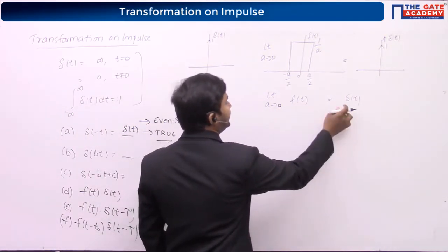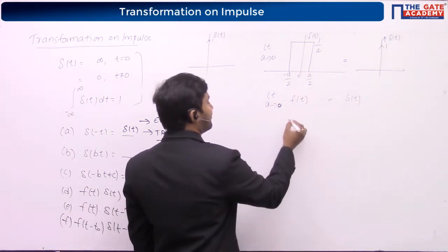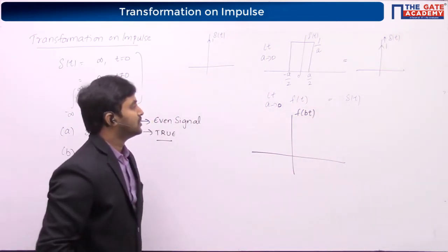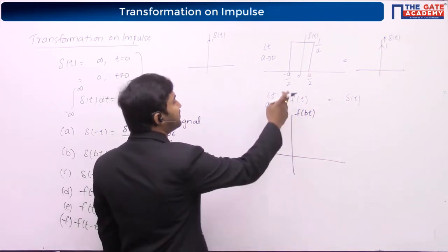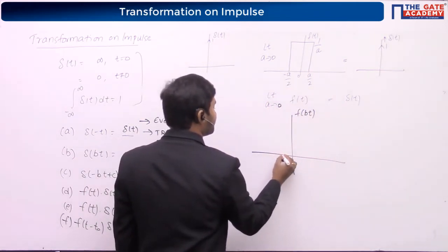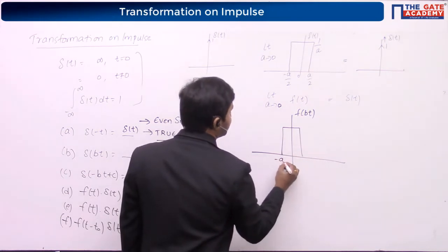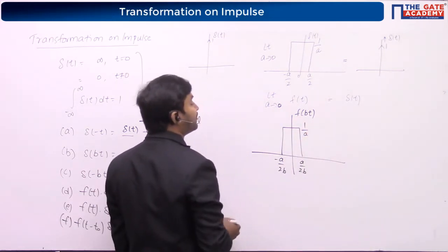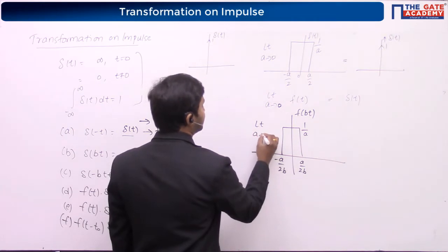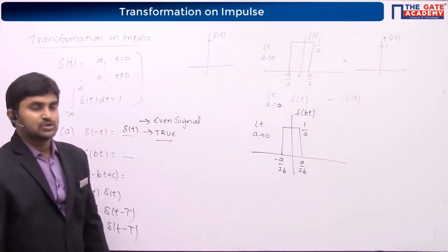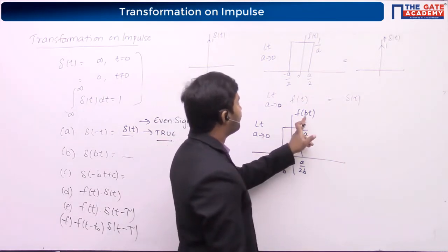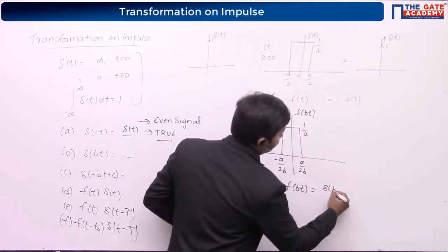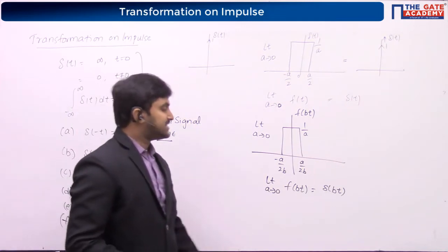Limit a tends to 0 of f(t) is equal to del(t). Now I will be applying the scaling operation because I wanted to find f(vt). If I divide the time axis by v, the rectangle spans from minus a/(2v) to a/(2v), and the amplitude is 1/a. As limit a tends to 0, f(vt) gives del(vt).